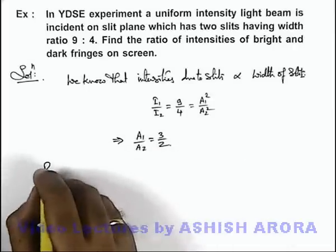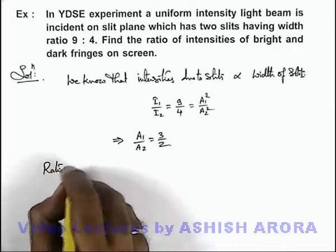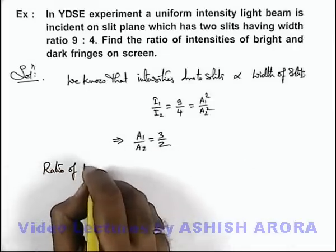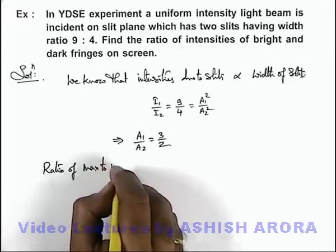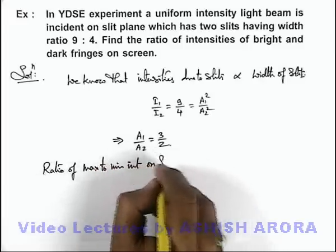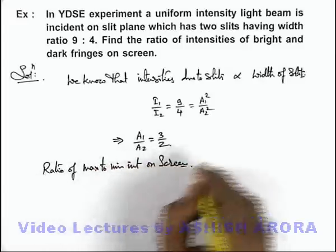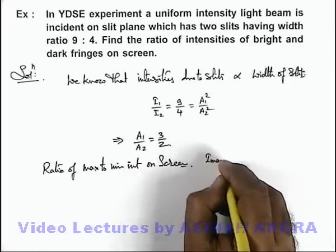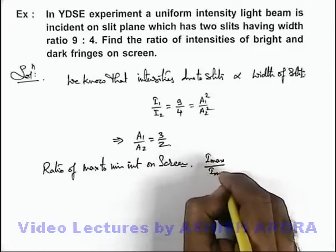Now if we wish to calculate the ratio of maximum to minimum intensities on screen, then this I_max by I_min we can write as...